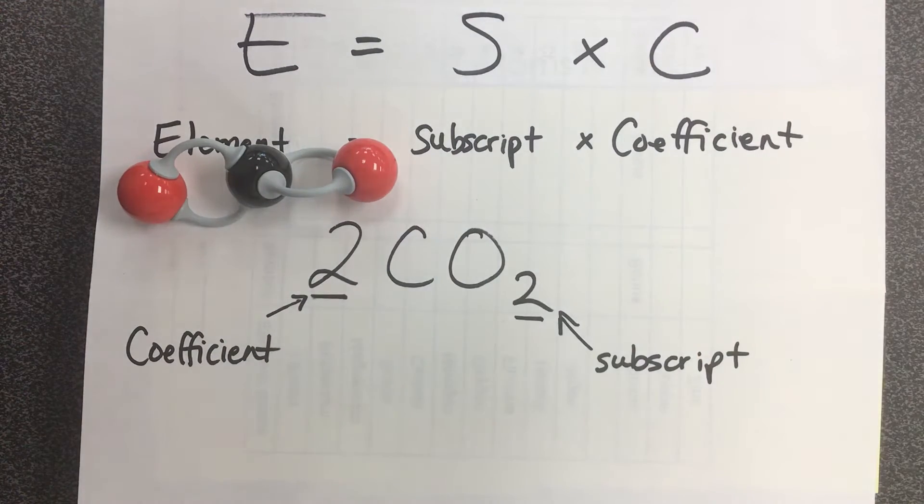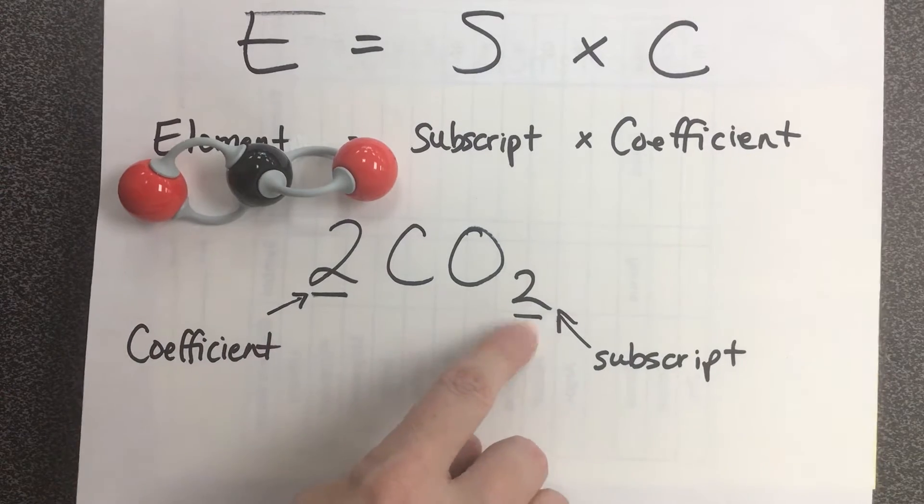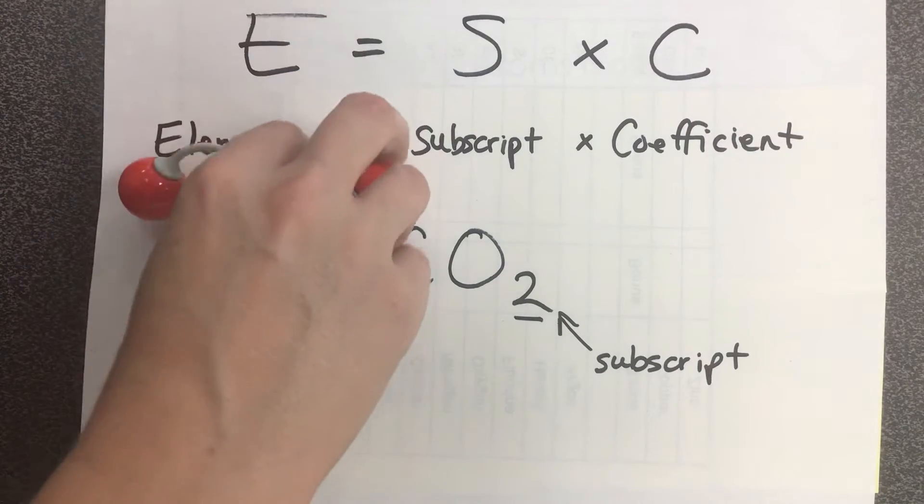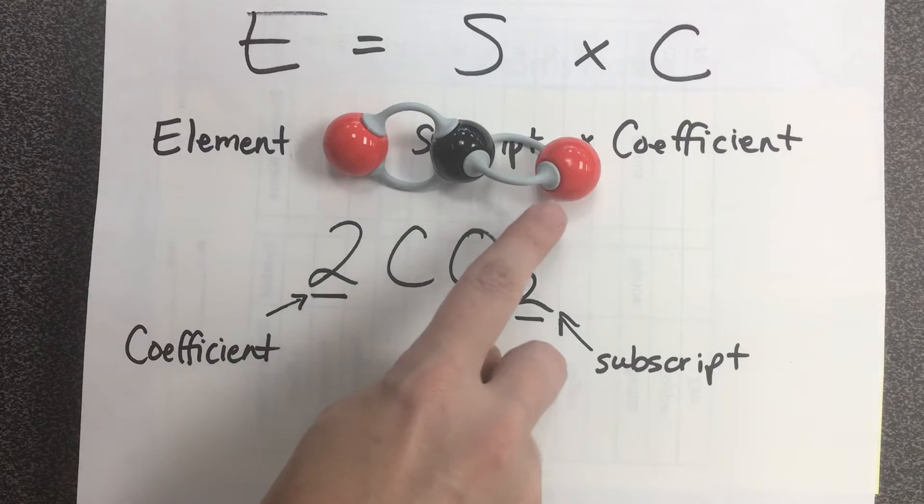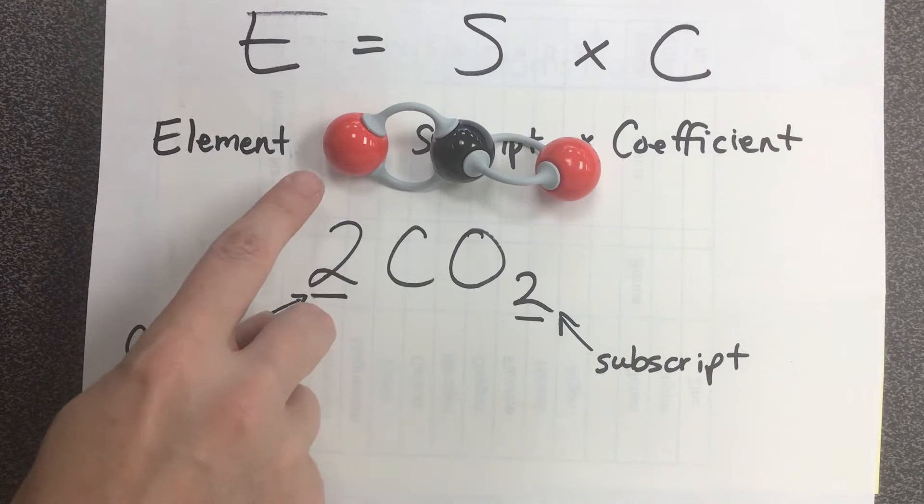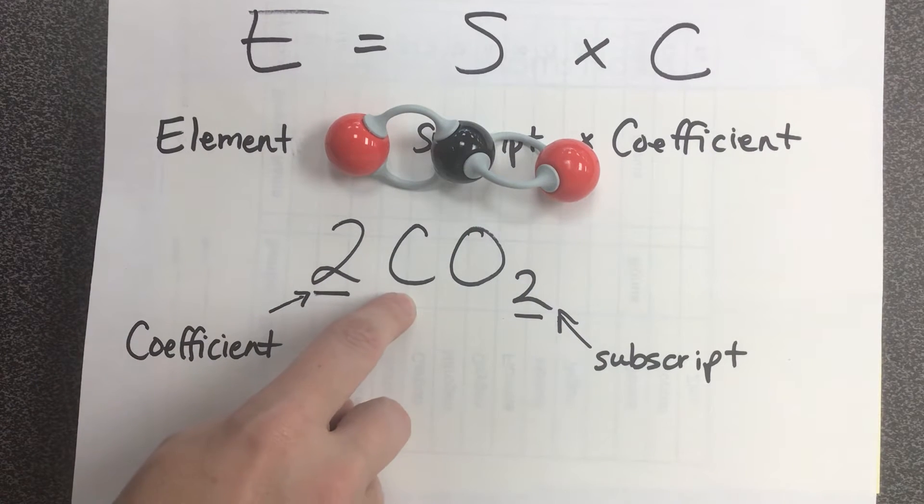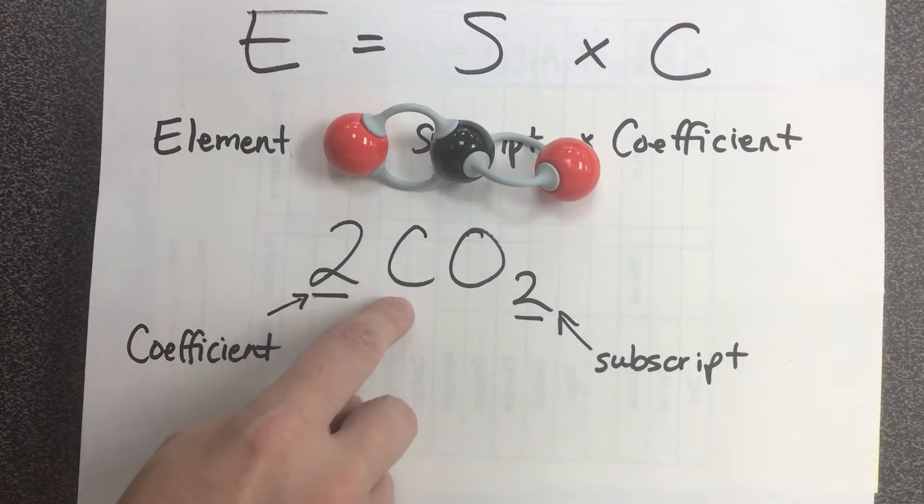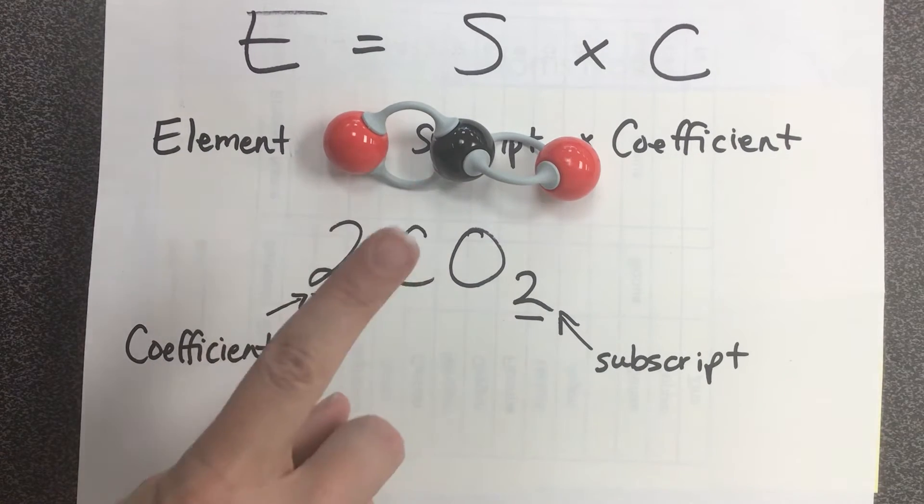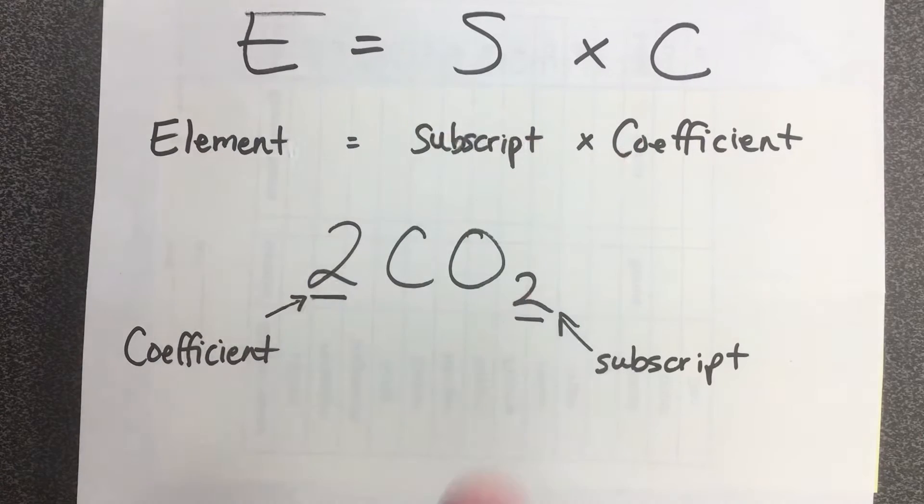The subscript two here represents that on a carbon dioxide molecule there are two oxygens. This carbon doesn't have a subscript, but since the C is present, it means that there is one of that atom.